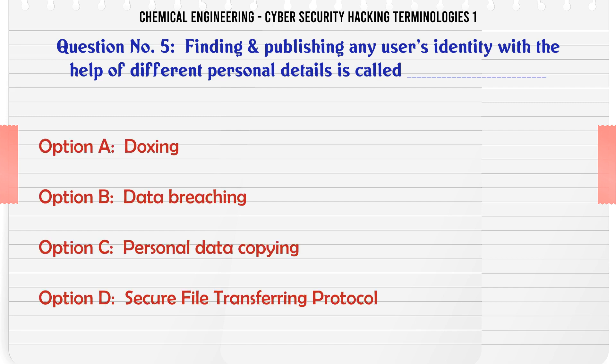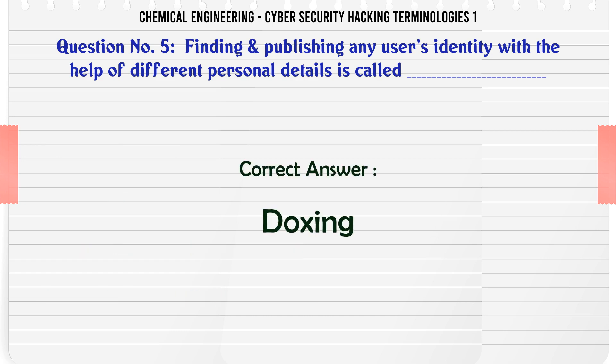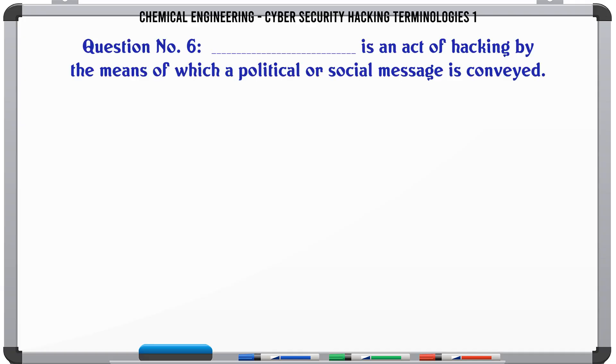Finding and publishing any user's identity with the help of different personal details is called A. Doxing B. Data Breaching C. Personal Data Copying D. Secure File Transferring. The correct answer is Doxing.